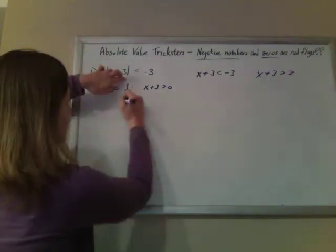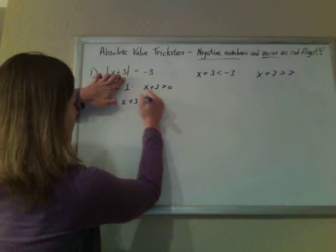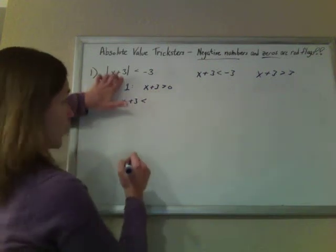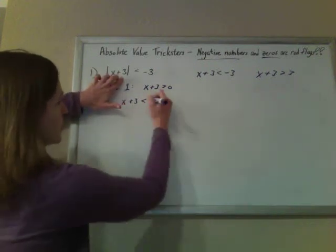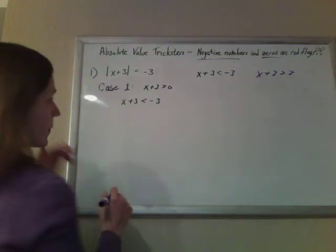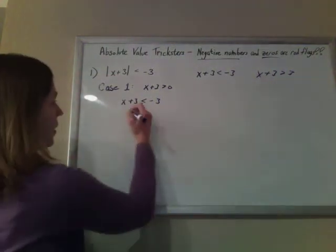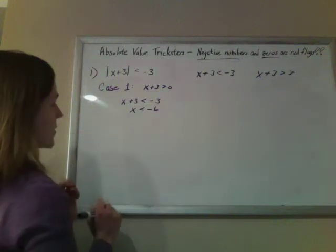Already represents a positive number. So for case 1, x plus 3 is already positive, so x plus 3 is, so the absolute value doesn't do anything, and x plus 3 is less than negative 3. So this is case 1, and x would be less than negative 6.